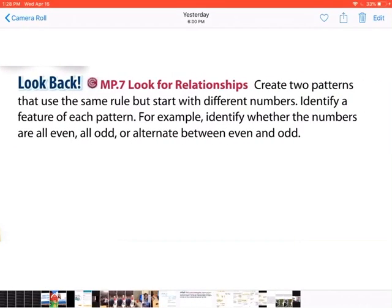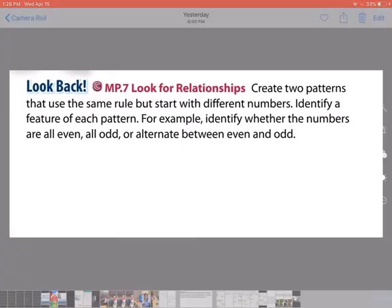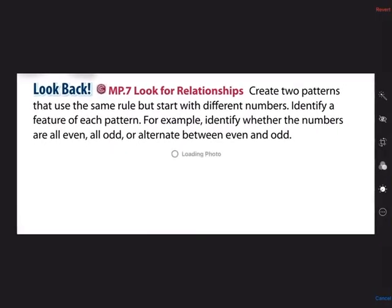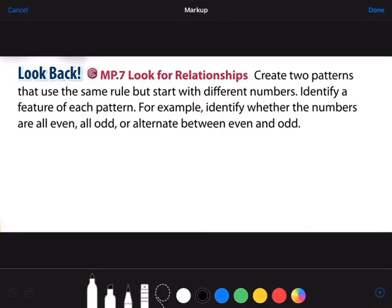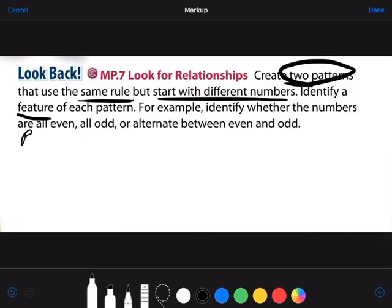Let's look at our look-back problem. It says: create two patterns that use the same rule but start with different numbers, and identify a feature of each pattern — for example, tell whether the numbers are odd, even, or alternate. So we need to make two patterns with the same rule but different starting numbers. They didn't give us the rule, so we can make up our own.